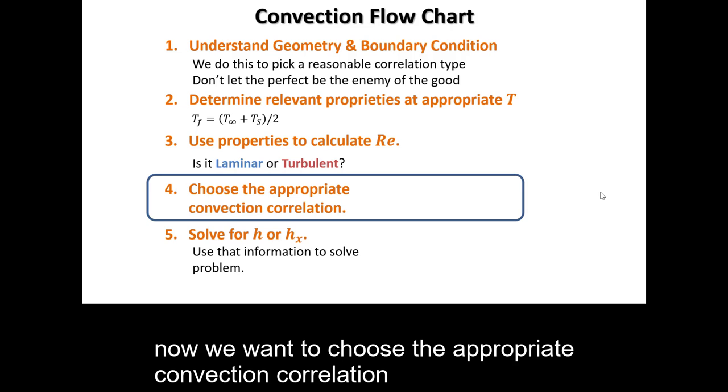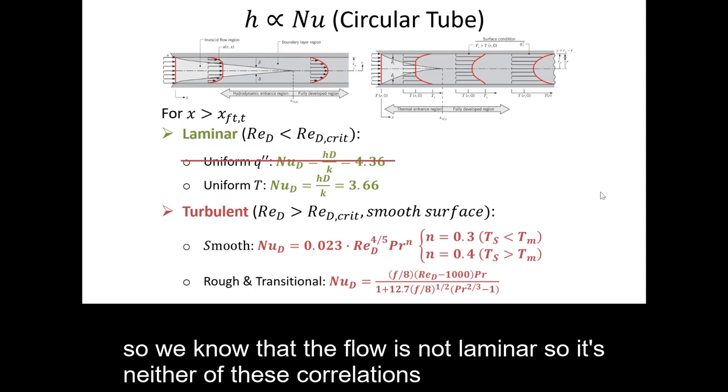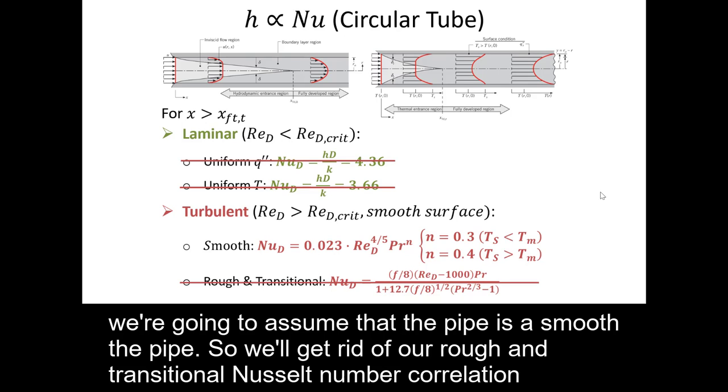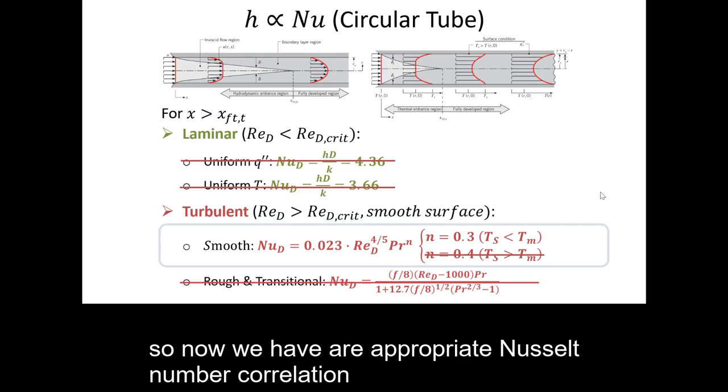Now we want to choose the appropriate convection correlation. So we know that the flow is not laminar. So it's neither of these correlations. We're going to assume that the pipe is a smooth pipe. So we'll get rid of our rough and transitional Nusselt number correlation. And we know that in this case the surface temperature is less than the temperature of the medium. So we'll pick an N of 0.3 instead of 0.4. So now we have our appropriate Nusselt number correlation.